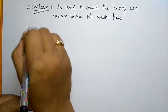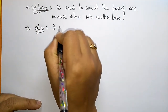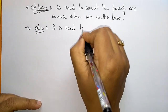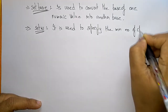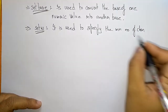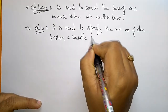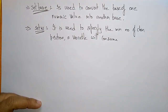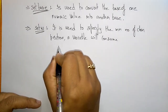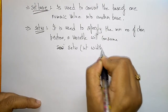Coming to setw, which stands for set width — it is used to specify the minimum number of character positions that a variable will consume. If you take any variable, that variable will consume a minimum number of positions, and that is decided by setw. The syntax is setw(int width), where you mention the width.